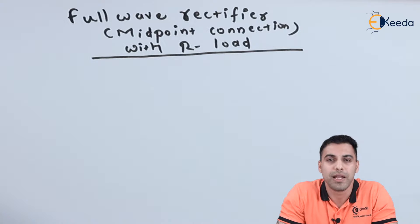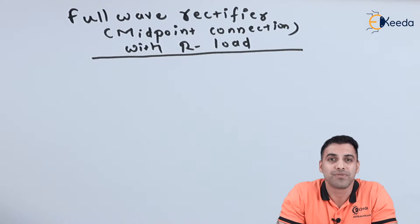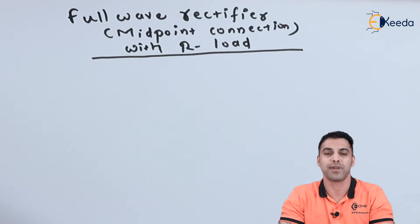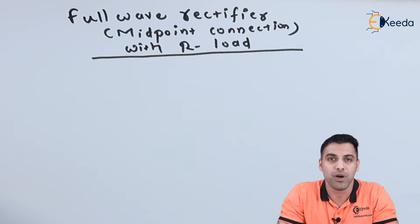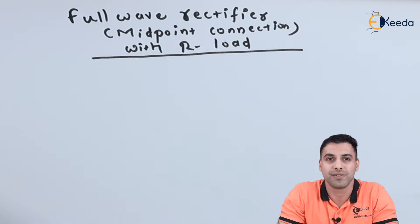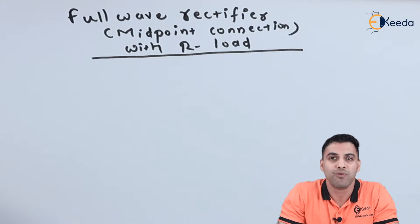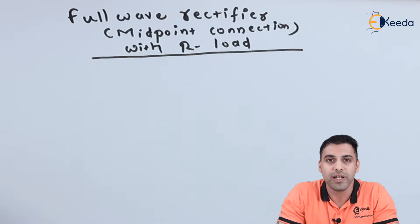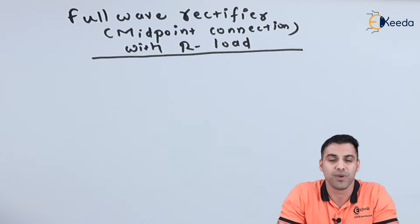The limitation of a half wave rectifier is that we are not getting the negative cycles of the input AC supply after rectification, so there is a complete power loss and the efficiency is 40.5 percent as we calculated in the earlier lectures. 40.5 percent efficiency means the efficiency is less than 50 percent, because of which the single phase half wave rectifier is not beneficial for electrical applications. So to reduce this limitation we introduced a new technique called full wave rectification.